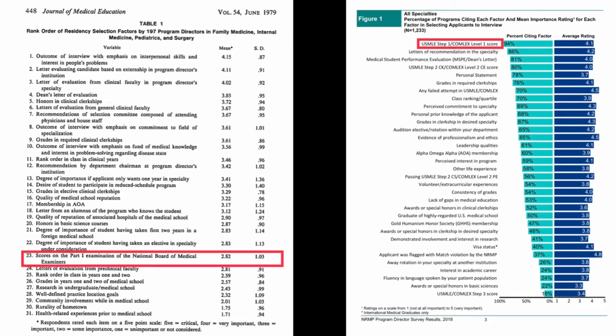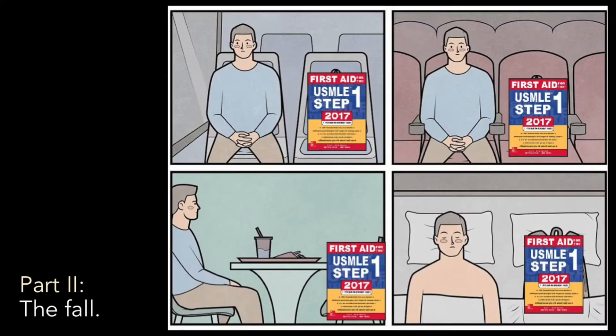What we saw was a steady increase in the use of USMLE Step 1 scores in applicant evaluation. In 1979, a survey of program directors found that NBME Part 1 scores were ranked 23rd out of 31 possible factors that could be used in candidate evaluation. Things look a little different these days, where the USMLE Step 1 score is consistently the most cited factor by program directors responding to the NRMP's program director survey. Of course, we all know what happened next: the very factors that led to our idolatry of the Step 1 score led to its implosion. That brings us to Part 2: The Fall.